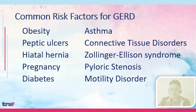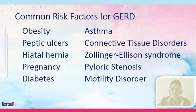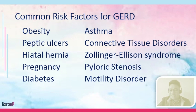Next, we have peptic ulcer and hiatal hernia — these disorders we'll be discussing later on. We also have pregnancy. Then we also have diabetes. One complication of diabetes is diabetic gastropathy, meaning the tissues of the stomach are already affected because of prolonged high levels of blood sugar, resulting in damage to the gastric walls and also the weakening of your LES.